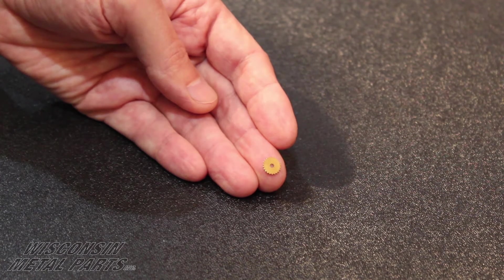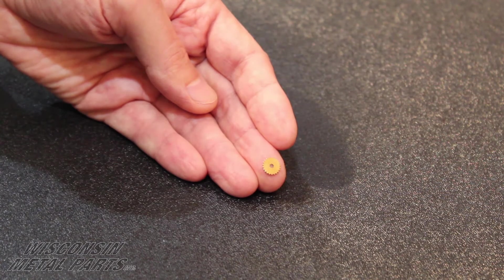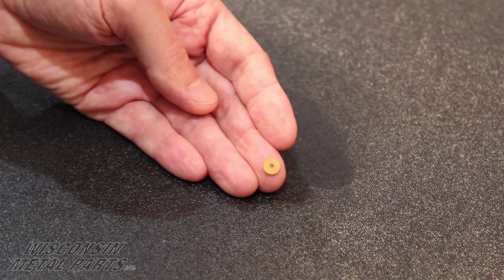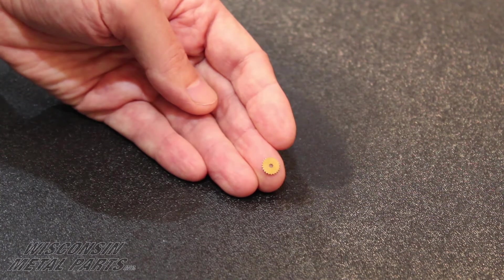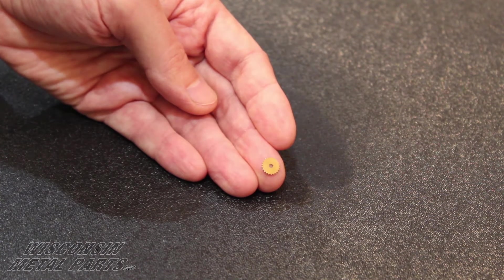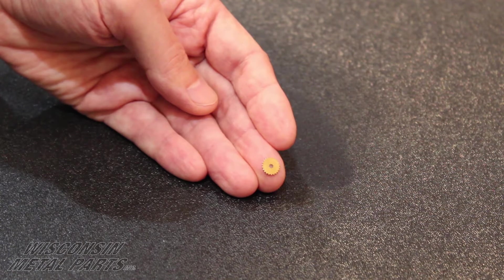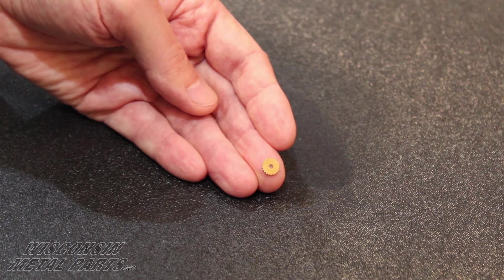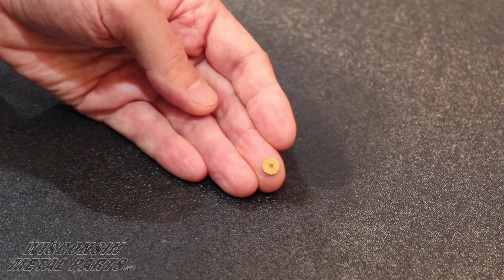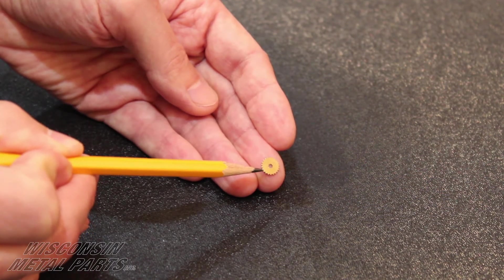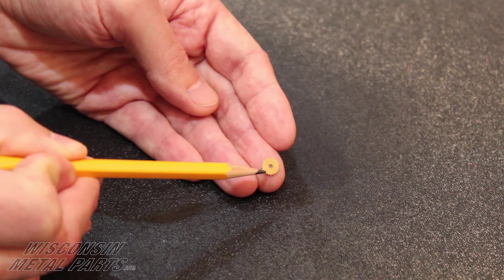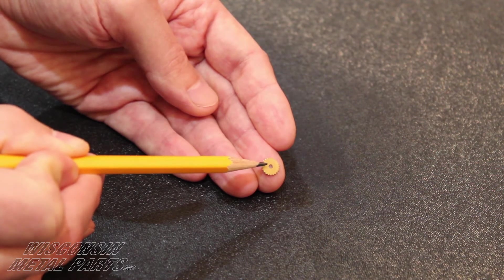This particular part is made out of brass and some of the key features here is a five thousandths position that we have to hold on all features back to a centerline datum. And we also have a secondary datum that goes around the outside of the gear. We have to hold a thou and a half total run out between these outside teeth and this inside spline.